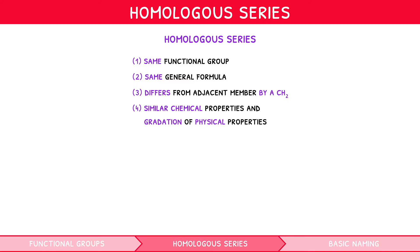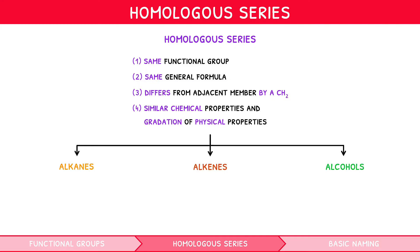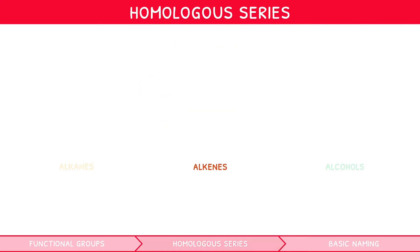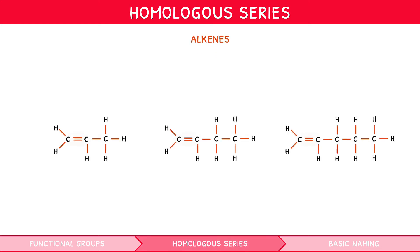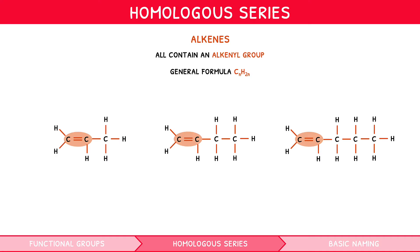The three homologous series you need to know in detail are alkanes, alkenes, and alcohols. Let's use alkenes to illustrate these rules by considering three sequential members. Each contains the alkenyl functional group, i.e. a carbon-carbon double bond. Each can be defined by the general formula CnH2n — substituting 3 for n returns C3H6, 4 returns C4H8, and 5 returns C5H10 — which all match the formula for these structures.